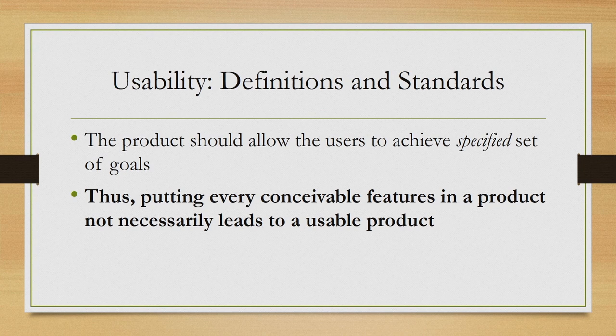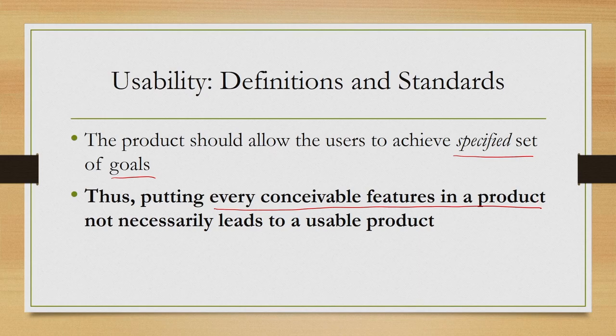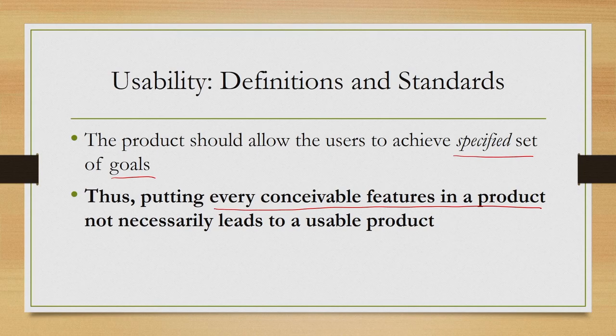The second crucial aspect is that the product should allow the users to achieve a specified set of goals. It is very important to note that putting every conceivable feature in a product to satisfy everybody does not necessarily lead to a usable product. A usable product by standard definition is supposed to satisfy a specific set of goals of the users. It is not necessary that the user can achieve every possible goal — that is the second thing to keep in mind.